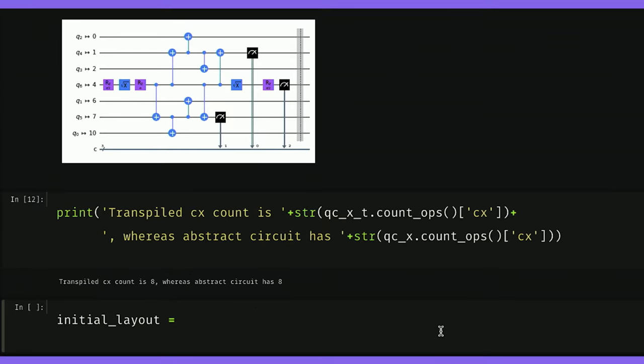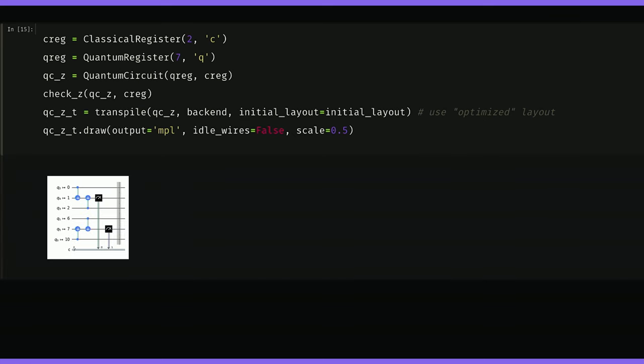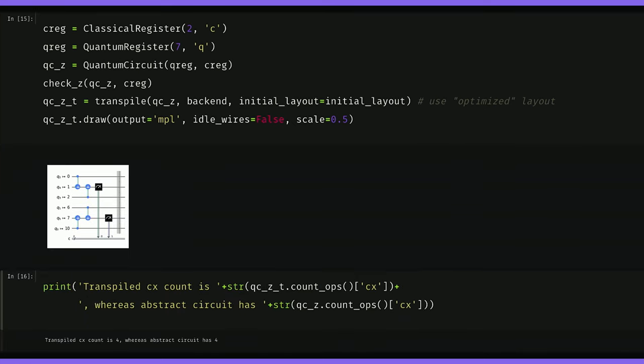Our initial layout here, we see the mapping goes from 0 to 10, 1 to 6, 2 to 0, 3 to 2, 4 to 1, 5 to 7, and finally 6 to 4. So this will be our initial layout that we want to enforce on our other qubits. Next, we want to check that this optimized layout still respects the connectivity for our Z parity checks. Looking good with four CNOTs still and confirming that we have four CNOTs in the abstract circuit. So this is a good initial layout.